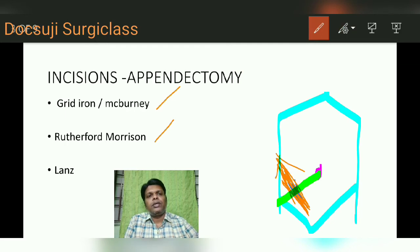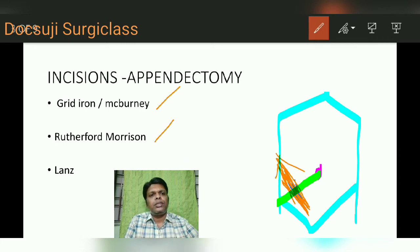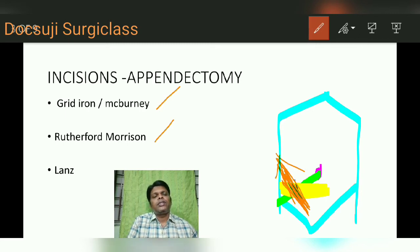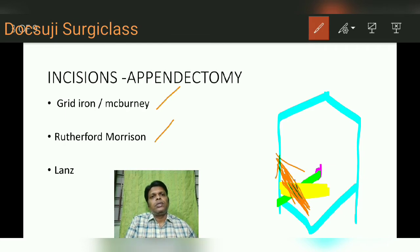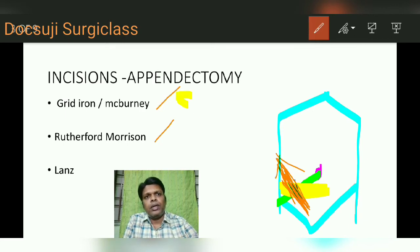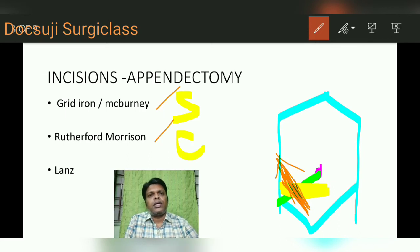The third incision is the Layens incision, which is made two centimeters below the infra-umbilical region traversing through McBurney's point. It is useful in appendicectomy and mainly for cosmetic purposes. This is a muscle splitting incision. So to summarize: grid iron or McBurney's is muscle splitting, Rutherford Morrison is muscle cutting, and Layens incision is muscle splitting.